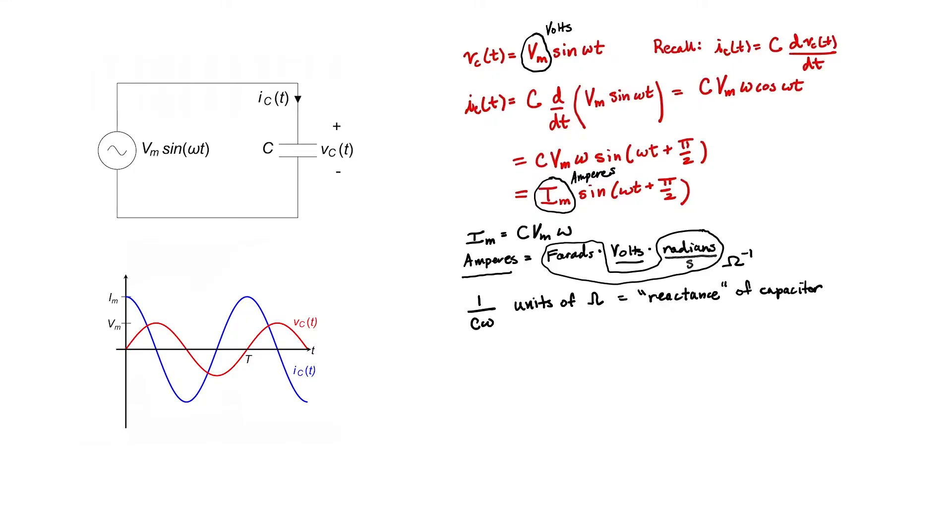I'd like to calculate the instantaneous power through the capacitor. Let's first look at the waveforms. We can see that in this region both the voltage and current are positive. Therefore, the power should also be positive. In this region, the voltage is positive but the current is negative. Therefore, the power should be negative.